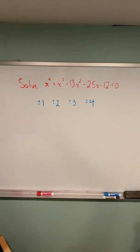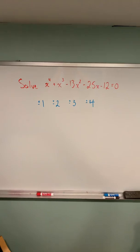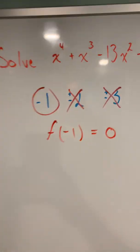Positive and negative 1, 2, 3, and 4 are all factors of negative 12. After checking all these, we see that negative 1 will make the function equal to 0.